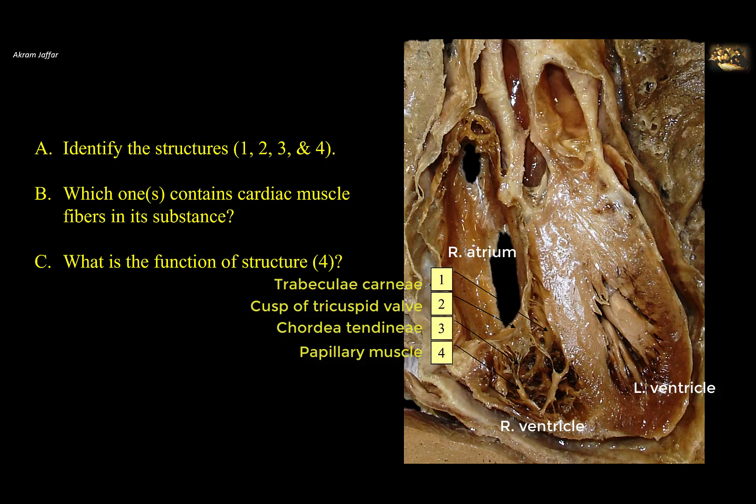Papillary muscles project into the cavity of the ventricle from the trabeculae carneae, which are only present in the wall. The trabeculae carneae, 1, and the papillary muscles, 4, contain cardiac muscle fibers inside them. So these are two structures that contain cardiac muscle fibers. The other two structures, which are the chordae tendineae and the cusps of the valve, are made of connective tissue covered by endocardium, the inner layer of the heart. They do not contain cardiac muscle fibers and are non-contractile.